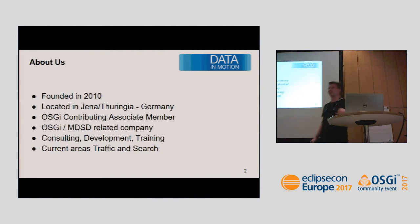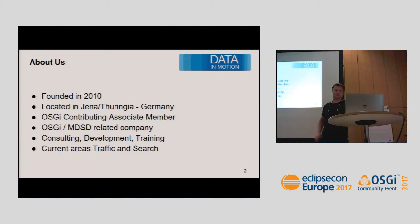First, about me: who am I? My name is Jurgen Albert. I am the CEO and founder of data motion consulting. I founded the company in 2010 and we started out with Eclipse RCP and related stuff.